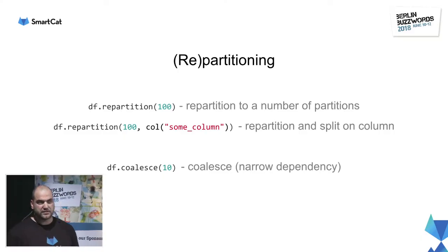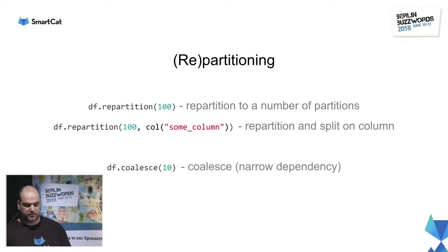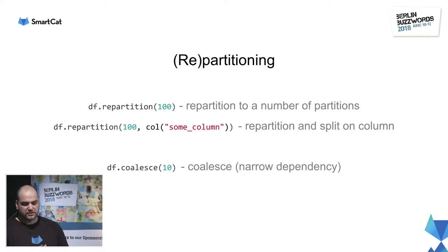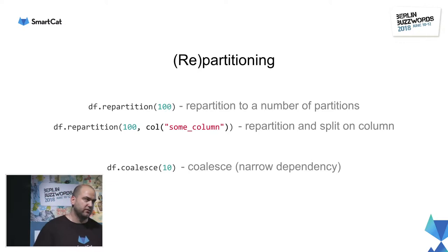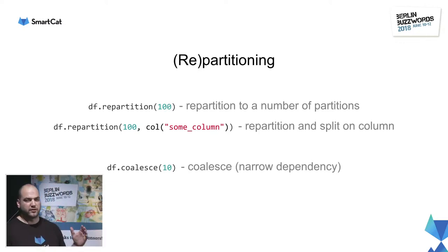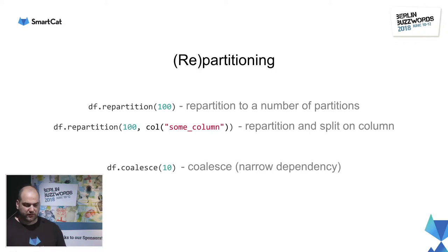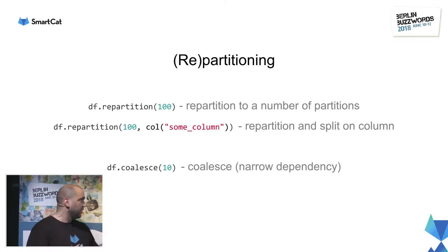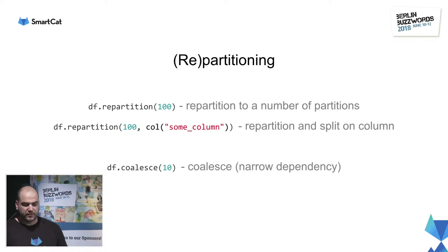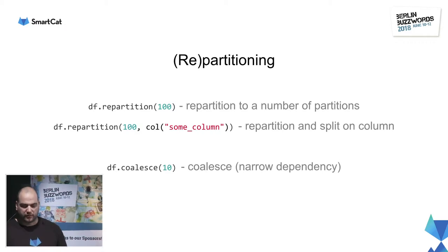Once you load the data, the next thing is re-partitioning. Re-partitioning tends to be expensive, but if done correctly and in the early stages — partitioning by a join field — it can pay off down the road. There are two ways to re-partition: a standard shuffle with the number of partitions you want, or re-partition by a number of partitions and a column expression, one or multiple columns, giving a hint to the partitioner how data will be distributed throughout the cluster.